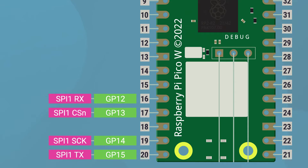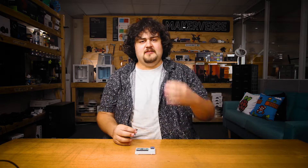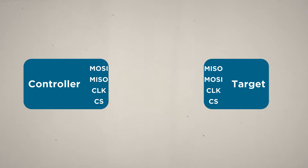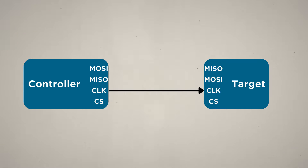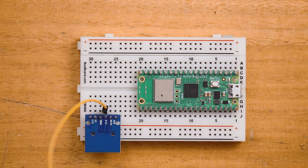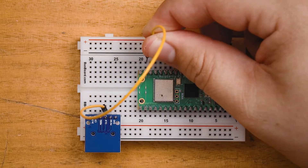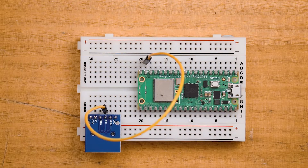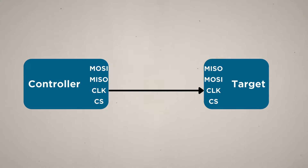Let's make our first connection: the serial clock wire. SPI is a synchronous protocol, meaning all connected devices need to interact with each other in sync. The Pico creates a clock signal — a digital rhythm that everything synchronizes to. We need to connect the serial clock of our reader to the serial clock pin of our Pico, which is pin 14.